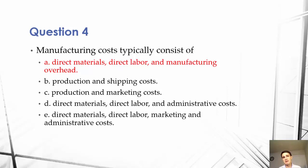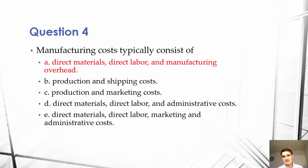C would not be appropriate because marketing costs generally would not be associated with the cost of a manufacturing process. We'll get into that later. D — direct material, direct labor, and administrative costs — again, administrative costs wouldn't be appropriate for costing a material in a manufacturing process because it isn't really a direct cost, and administrative costs could be associated with other matters in the business, so it really wouldn't be appropriate.